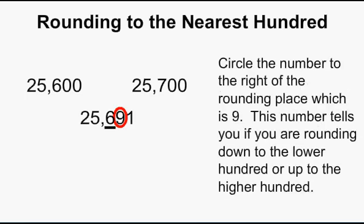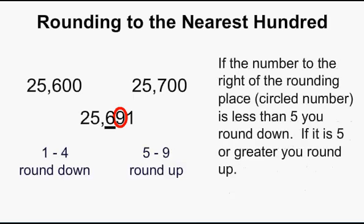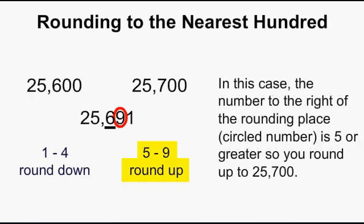Circle the number to the right of the rounding place, which is 9. This number tells you if you are rounding to the lower hundred or up to the higher hundred. If the circled number is less than 5, then you round down. If that number is 5 or greater, you round up. In this case, the circled number is 5 or greater, so you round up to 25,700.